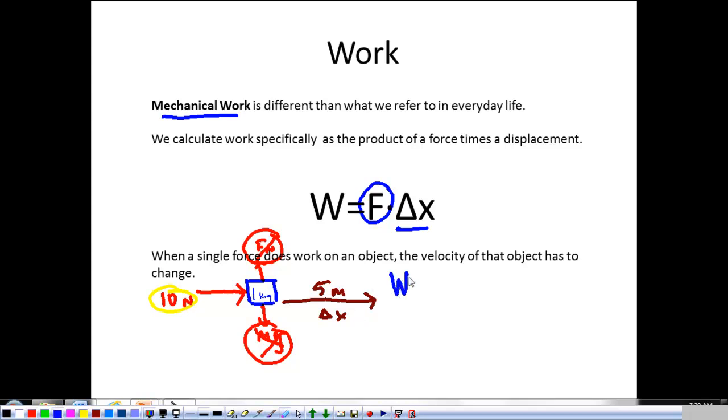So, if I want the work done on this thing, I have the force in the direction of motion, 10 newtons, times 5 meters. So, the work done on this object is going to be 50 newton meters. Well, a while ago, physicists decided that that was hard to say. So, we're going to say that it is 50 joules. Joule is our unit for work. One joule is one newton meter.